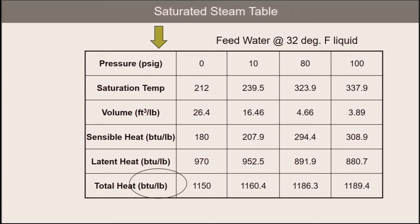As I mentioned before, the usable energy is the latent energy. And the sensible energy — the 180 BTUs in this particular case — would be what is left in the condensate once the pound of steam gives up its latent heat, that content of which we added 970 BTUs.